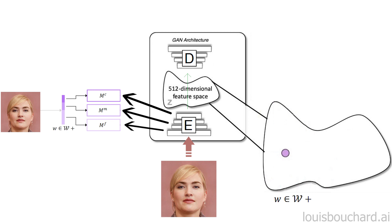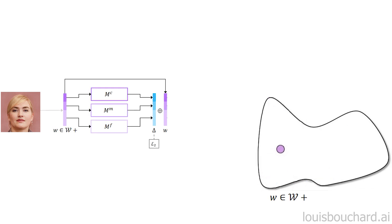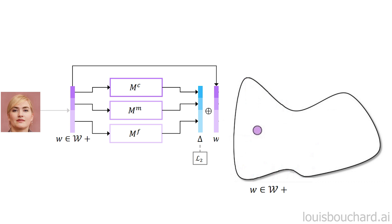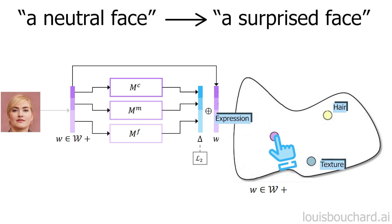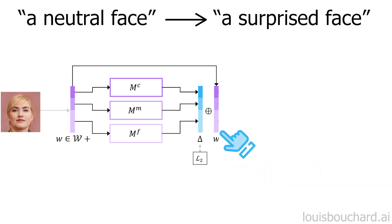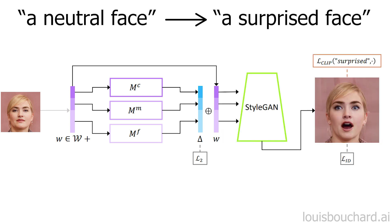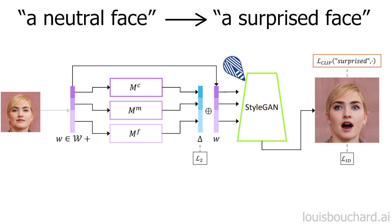This is where the CLIP model is used to manipulate these mappings. Because of the training, these mappings will learn to move accordingly to the text input, as the CLIP model understands the content of the images and encodes the text in the same way as the image is encoded. Thus, CLIP can understand the translation made from one text to another — like a neutral face to a surprised face — and tell the mapping networks how to apply this same transformation to the image mappings. This transformation is the delta vector here, controlled by CLIP, which applies the same relative translations and rotations to the latent code W as what happened for the text. This modified latent code is then sent into the StyleGAN generator to create our transformed image.